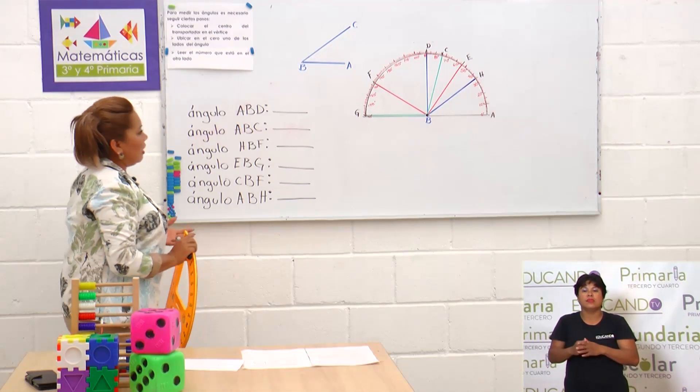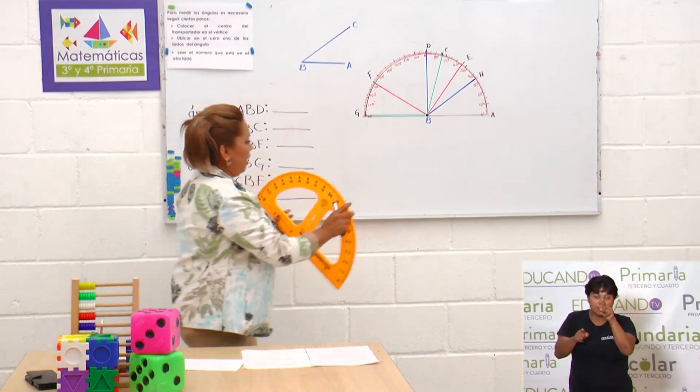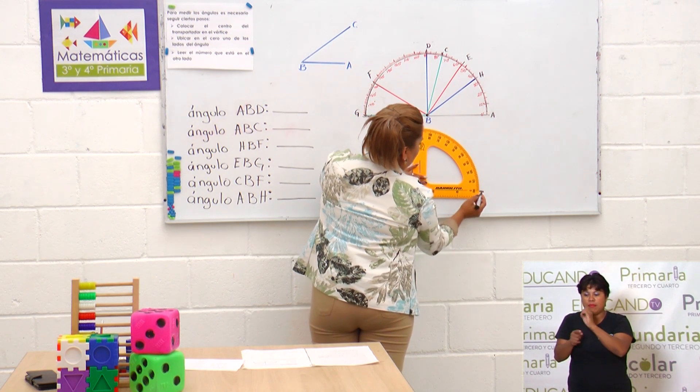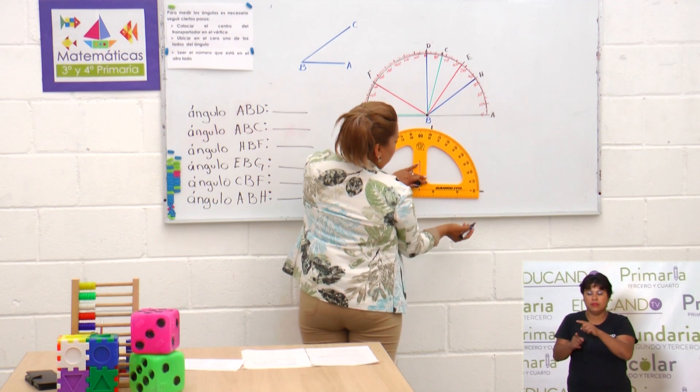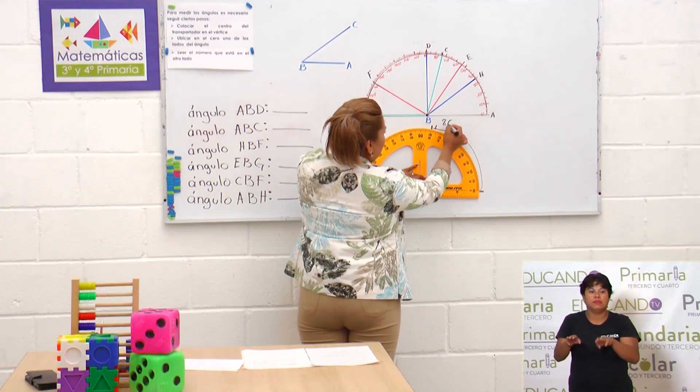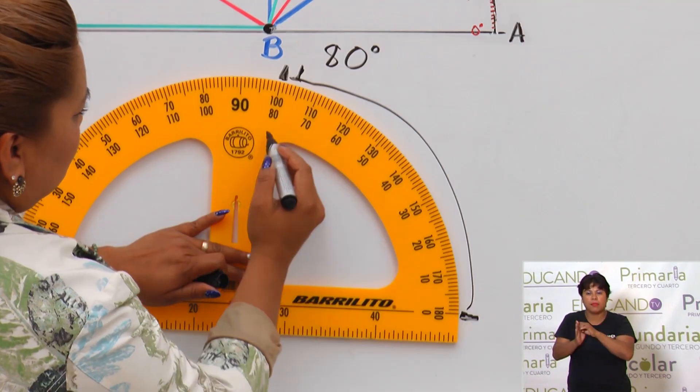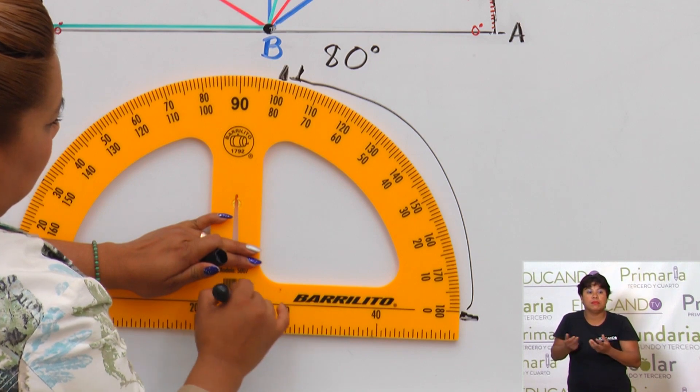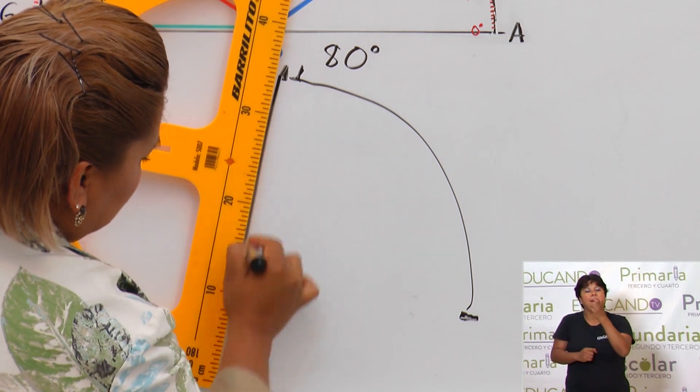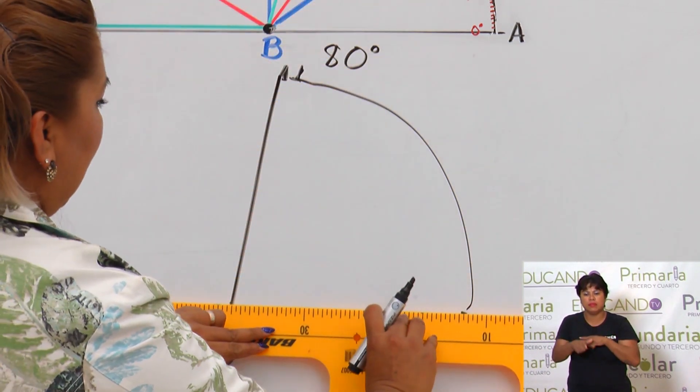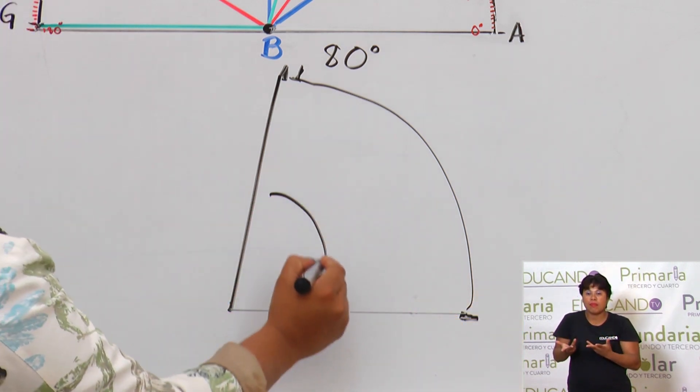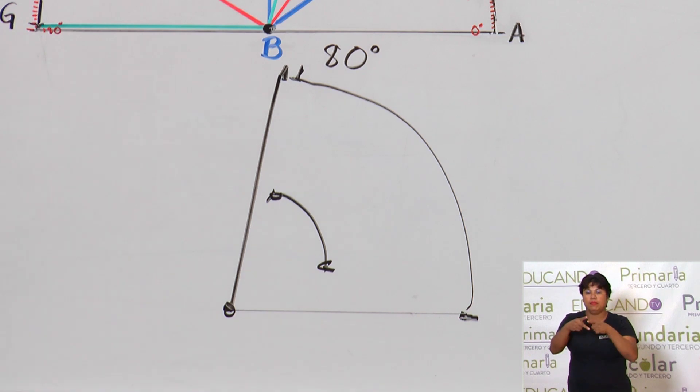Ahora, leer el número que está en el otro lado. Bien. Si yo estoy tomando aquí y me marca acá, ¿qué debo de tomar en cuenta? Este para medir el ángulo. Quiere decir que de aquí a acá estoy formando un ángulo de ¿cuánto? De 80 grados. Esos son los tres sencillos pasos que nosotros tenemos que seguir para usar el transportador y así saber cuántos grados tiene un ángulo.